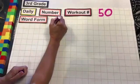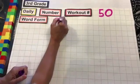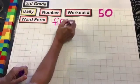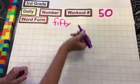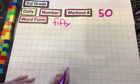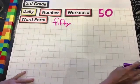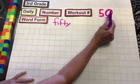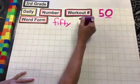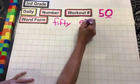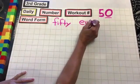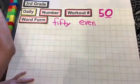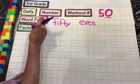And it would be F-I-F-T-Y, 50. And because our one's place value is a zero, it is an even number. All right, let's go for our factors.